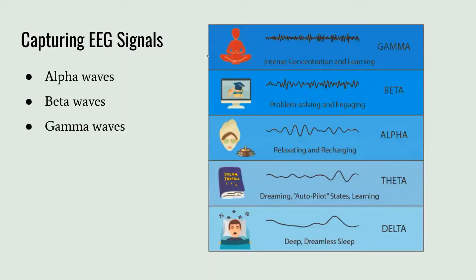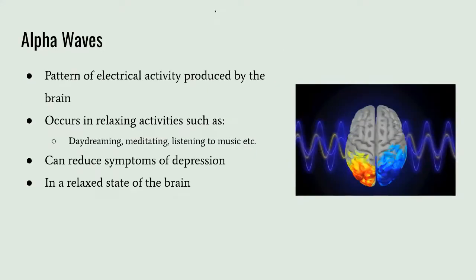There are five main types of brainwaves, and alpha waves, beta waves, and gamma waves are the strongest. Alpha waves are a pattern of electrical activity produced by the brain, and they often occur when a person is doing relaxing activities like daydreaming, meditating, or listening to music — basically a relaxed state of the brain. Alpha waves can also reduce symptoms of depression.